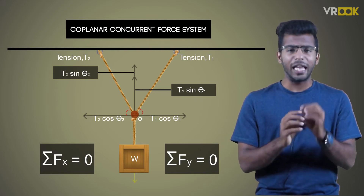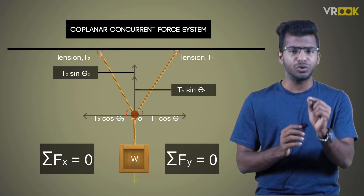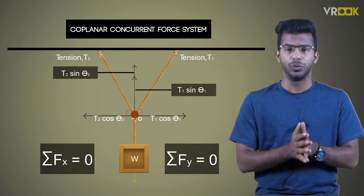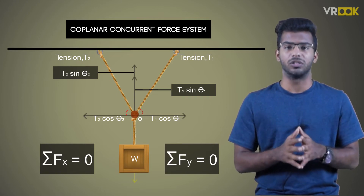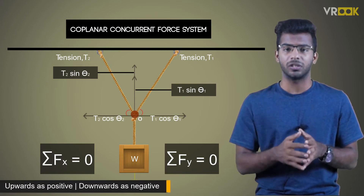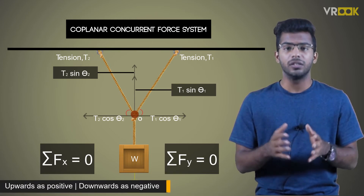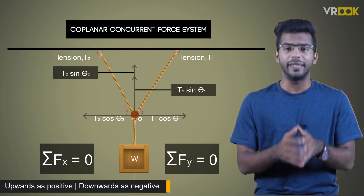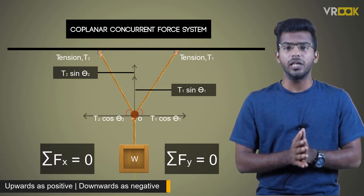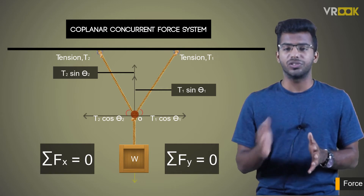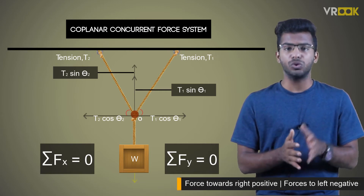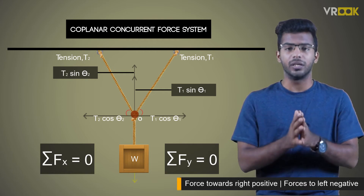We have to assume any one direction of force as the positive direction and take those values as positive. So if we take the force acting upwards as positive, then the force acting downwards will be taken as negative. Similarly, if the force acting towards right is taken as positive, then the force to the left is taken to be negative.